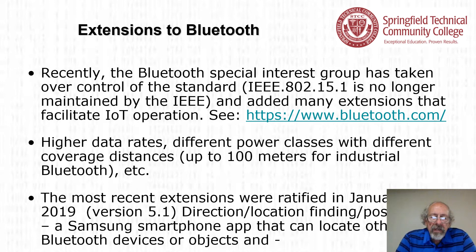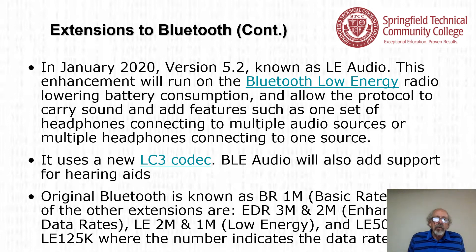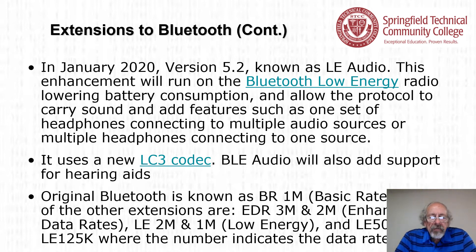The most recent extensions were ratified in January 2019 as version 5.1, adding direction finding, location, and positioning — for example, a smartphone app that can locate other Bluetooth devices or objects like lost earbuds. In January 2020, version 5.2, known as LE Audio, runs on Bluetooth Low Energy radio, lowering battery consumption and allowing the protocol to carry sound. It adds features such as one set of headphones connecting to multiple audio sources or multiple headphones connecting to one source, uses a new LC3 codec, and adds support for hearing aids. Original Bluetooth is now known as BR/1M (basic rate), with extensions including EDR 3M and 2M (enhanced data rates), LE 2M and 1M (low energy), and LE 500K and LE 125K.